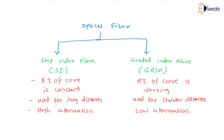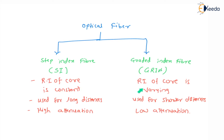In step index fiber, the refractive index of the core medium is constant. But in the case of graded index fiber, the refractive index of the core is varying — the value of RI is not constant over the entire cross section of the core.